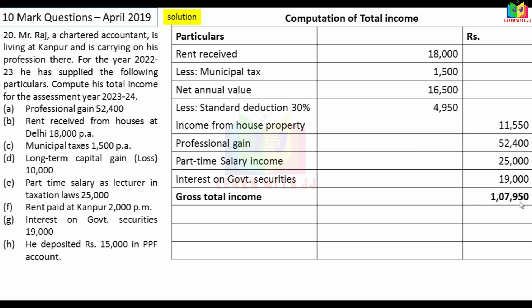Gross total income: Rs.1,07,950. Now for deductions: PPF deposit Rs.15,000 under 80C. Rent paid Rs.2,000 per month. Under 80GG, we have to claim the deduction.